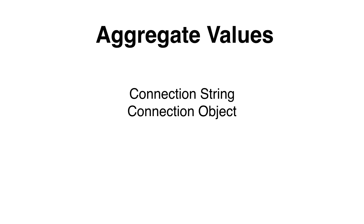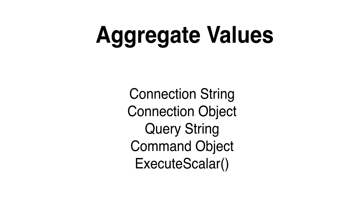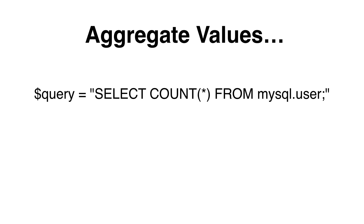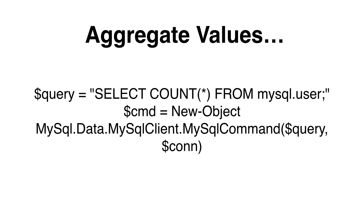If we would like to execute an aggregation statement, we can use a method specially designed for commands that return only a single value. Again, we need a connection string, a connection object, a query string, and a command object, and we can use the ExecuteScalar method to return a single value. Here is an example for a SELECT COUNT query. We create our command object from our query and connection objects, then execute the ExecuteScalar method from the command object to get our value.